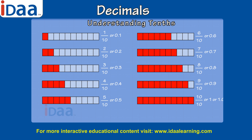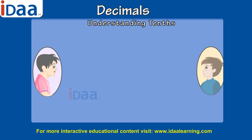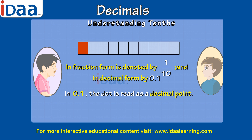We write 2 tenths as 0.2. Thus, a part of the whole can be represented in two forms — fraction form and decimal form. In 0.1, the dot is read as a decimal point.